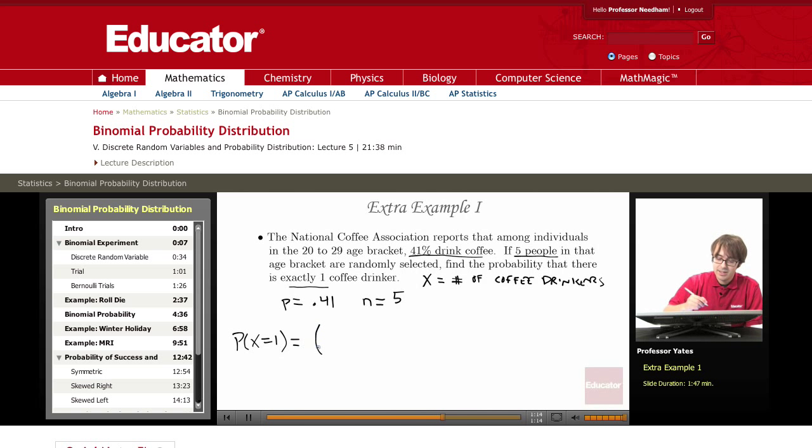Well, this is n choose x, so we have five choose one, we have p to the x power, and we have one minus p, which is 0.59, to the n minus x power, to the fourth power.